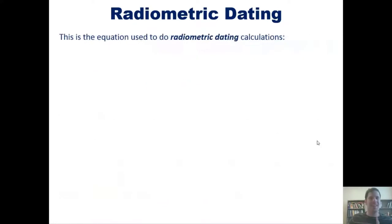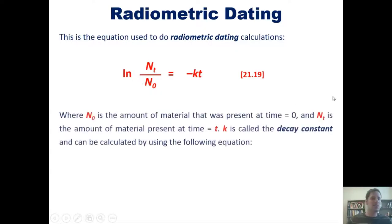This is the equation that we use to do mathematical dating calculations: ln of n sub t over n sub not equals negative kt, where n sub not is the amount of material that was present at time equals zero, and n sub t is the amount of material present at time equals t. k is called the decay constant and can be calculated by using this equation: k equals 0.693 divided by t sub one half.